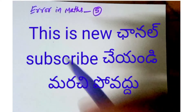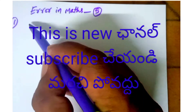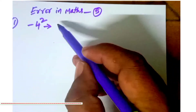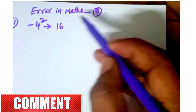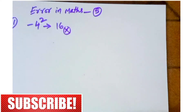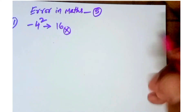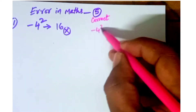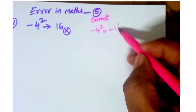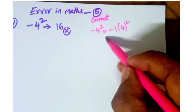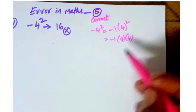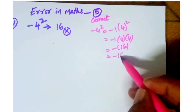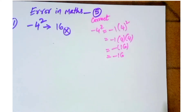The first error is with minus four squared. Students write minus four squared as positive 16 — that is wrong. The correct method is: minus four squared equals minus one into four squared, which is minus one into four into four, giving minus one into 16, which equals minus 16. That is the correct answer.